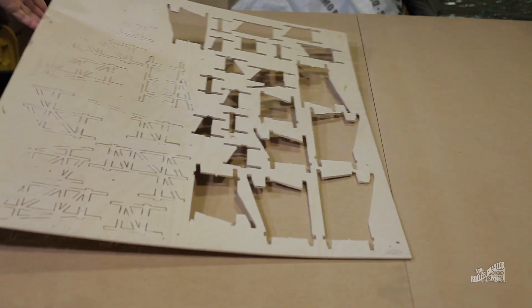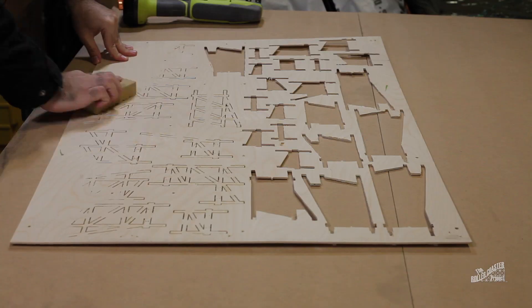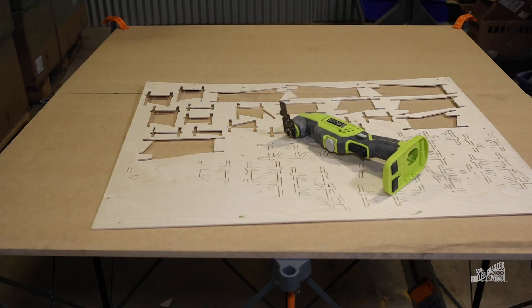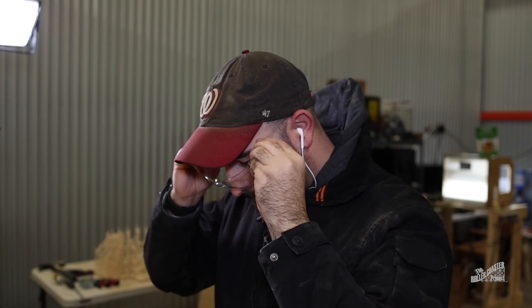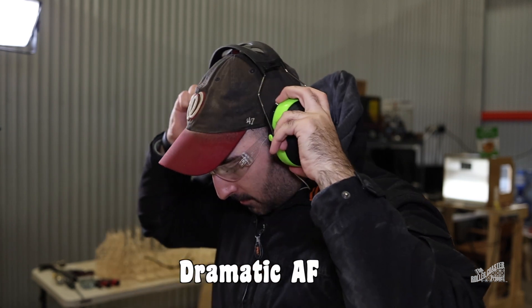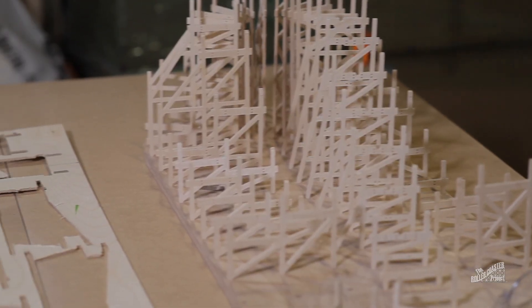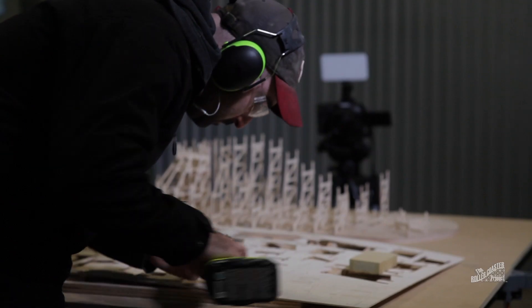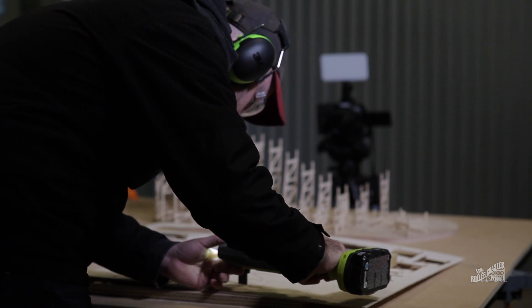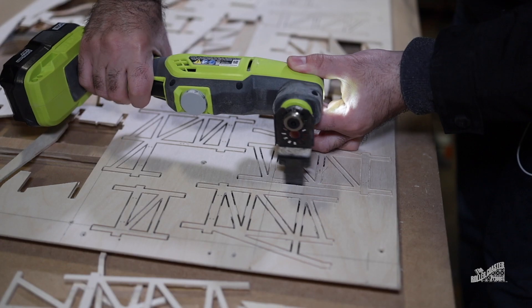With all machining work completed on the Shapeoko, it's time for some light sanding followed by removal of the tabs with the oscillating tool. The largest hassle with building this little coaster is really finishing the bents once they're machined. If you guys have a better method, please leave a comment down below.